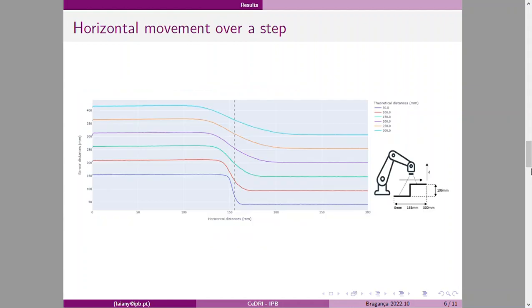Here we have the results for the first test. The gray line represents where the step begins and all the measures were consistent with the calculated distances.